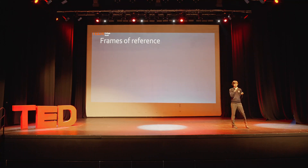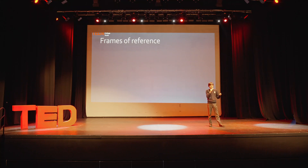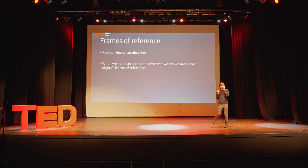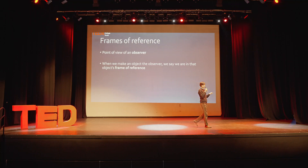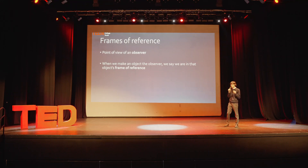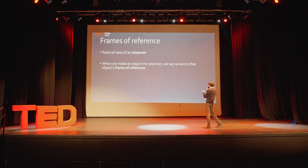A frame of reference is basically a fancy physics term for point of view. If you look from an object's point of view, you can say you're in that object's frame of reference. So if you look from my eyes, you're in my frame of reference. The thing that we choose to look from has a special name — it's called the observer. And there's a very special property about the observer, which is at the heart of what this postulate is saying, which I'll explain using a simple example.